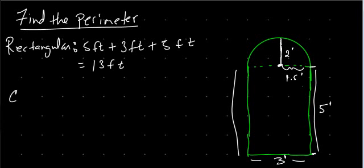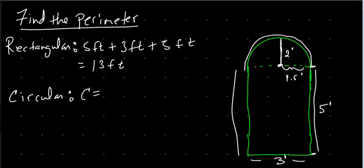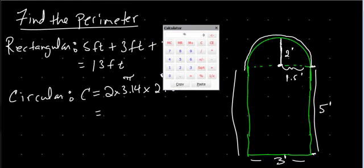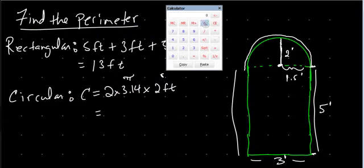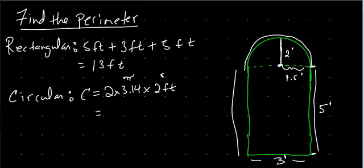Now let's look at the circular part of the window. We need to find the distance around from the top of this rectangle, around and back down to the other side. We know it's a circle with radius two feet, so we use the circumference formula: C equals two pi r, which is two times 3.14 times two feet. Using the calculator: two times 3.14 times two equals twelve point five six feet.